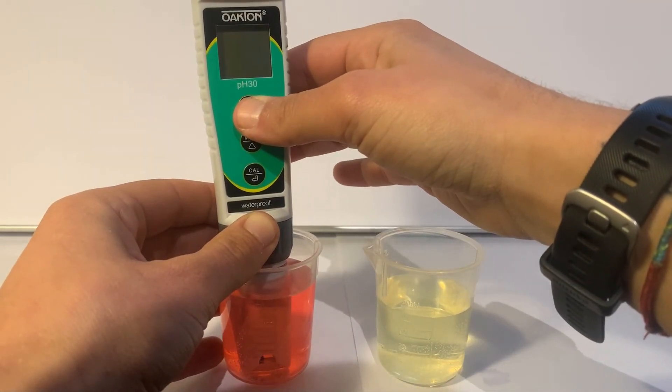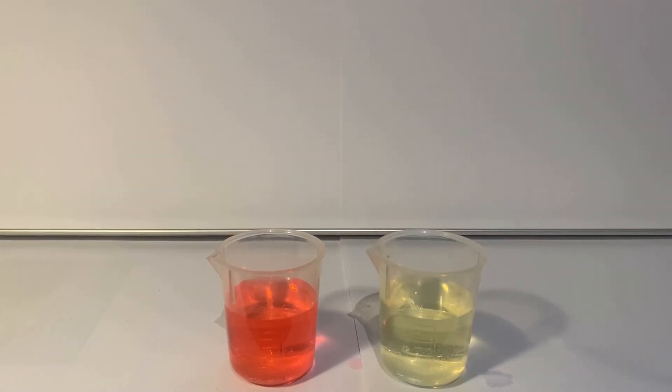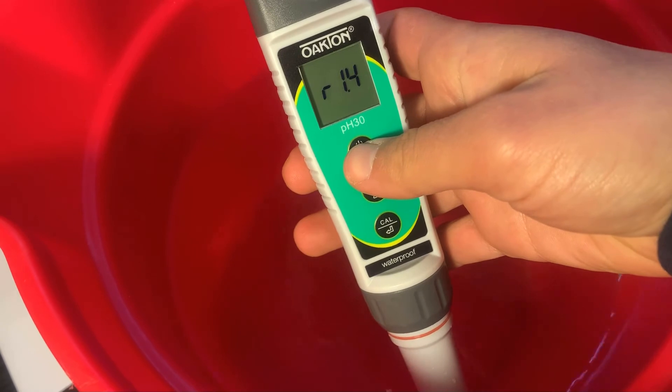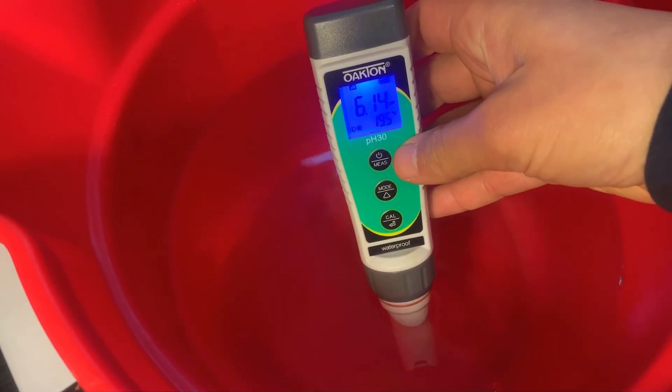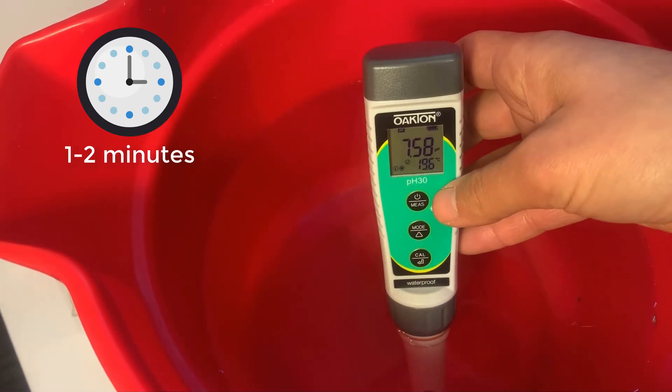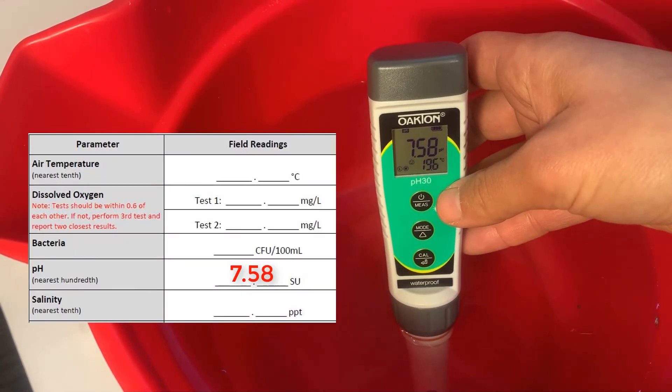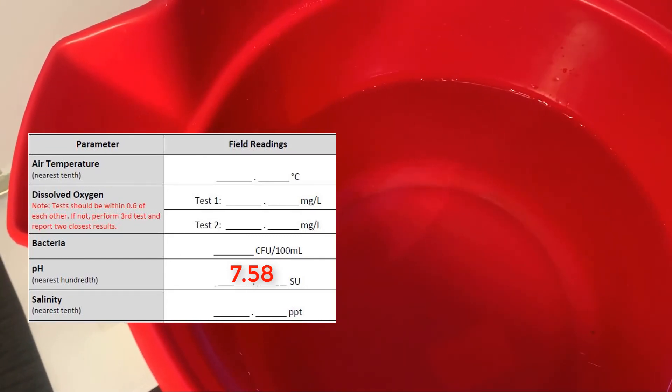Turn off your probe by long pressing the power button, then rinse with water and replace the cap to take it into the field. When you are in the field, short press the power button to turn it on. Place your probe into the sample water and wait a few minutes for the stabilization icon to appear. Record the number on the top of your screen as your pH reading on your data sheet.